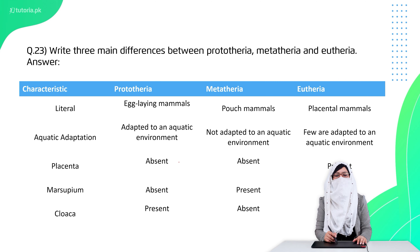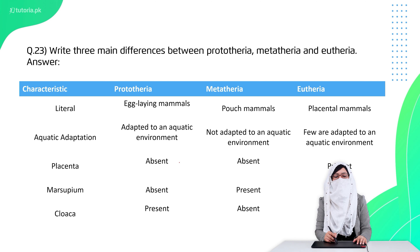Question 23 is: give the main differences between Prototheria, Metatheria, and Eutheria. Prototheria are egg-laying mammals, Metatheria are pouch mammals (marsupials), and Eutheria are placental mammals. Prototheria are adapted to an aquatic lifestyle. Placenta is absent in Prototheria. Marsupial mammals are Metatheria, and cloaca is present in Prototheria.